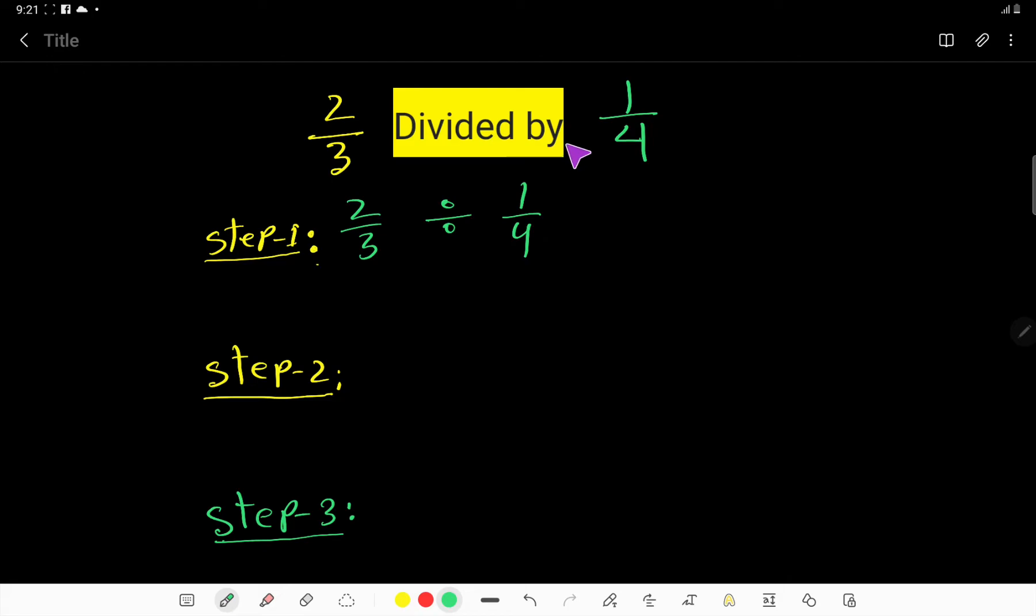This divided by means this division sign. In step 2, I will change this division sign to multiplication sign and take the reciprocal of this fraction, that is 4 over 1. Just change the position of numerator and denominator.